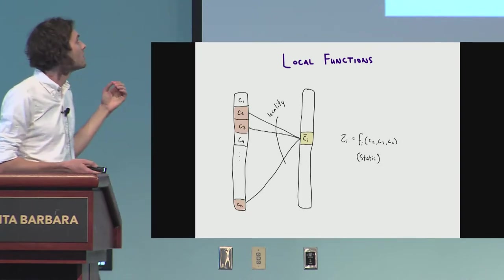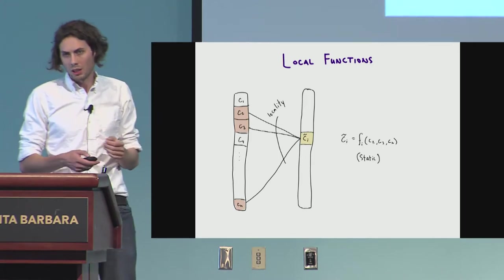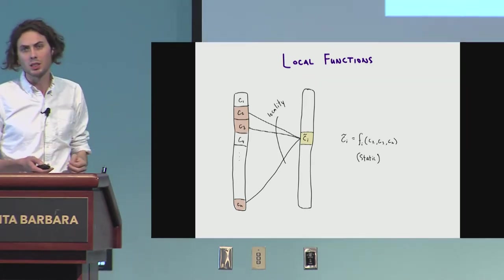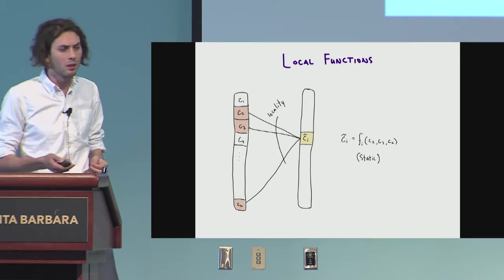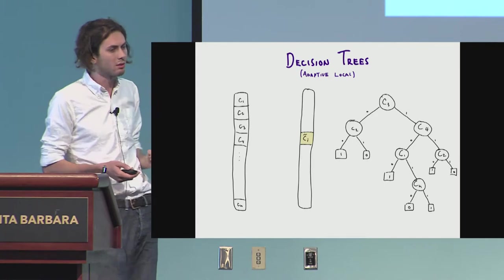So what is a decision tree? Recall this local function. So each output depends on a few input bits, it's local, but these choices of the input bits that it depends on are statically made. So in a decision tree, this is dynamic. On the right, we have a picture of a decision tree.